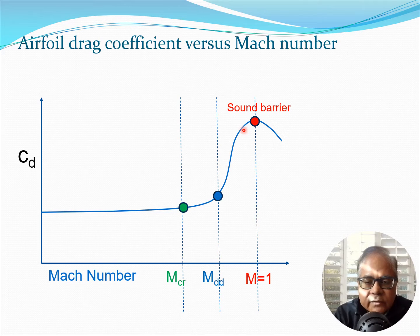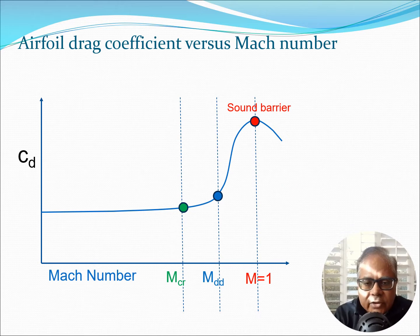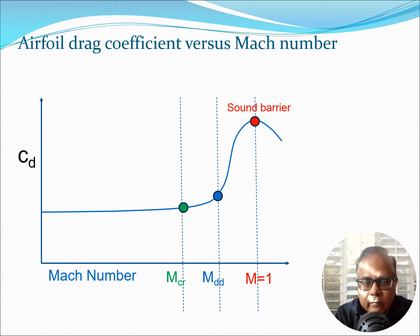Unless you have very powerful engines, you are not going to be able to cross this so-called sound barrier which takes place at Mach number 1. This restricted flight in supersonic regimes for a long time — people were not able to cross the sound barrier because they were using straight wings and thick airfoils, which caused a lot of problems.